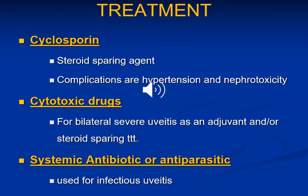Cyclosporine is a steroid-sparing drug; hypertension and nephrotoxicity are the most common complications of this drug. Cytotoxic drugs are reserved for severe cases of uveitis as adjuvant or steroid-sparing treatment. Systemic antibiotics and antihelminthics can be used for treatment of infectious causes of uveitis.